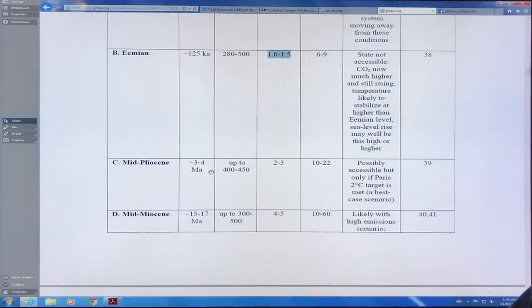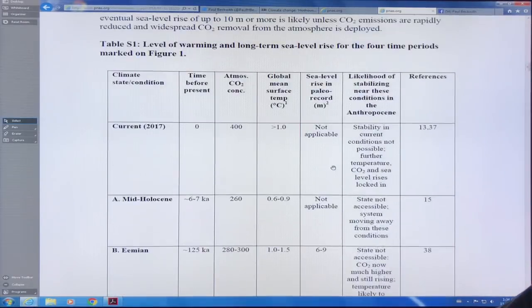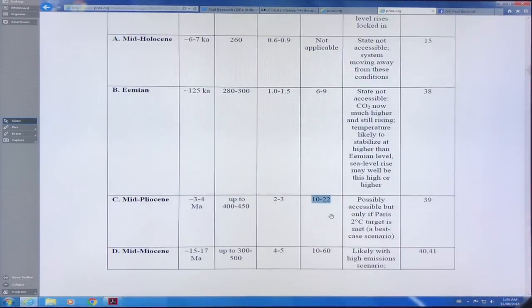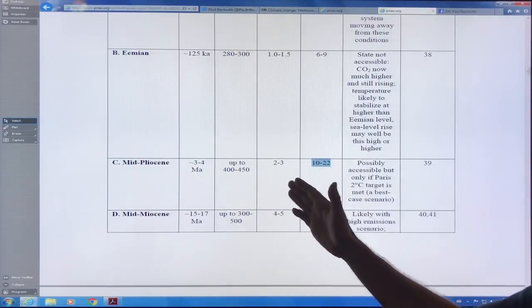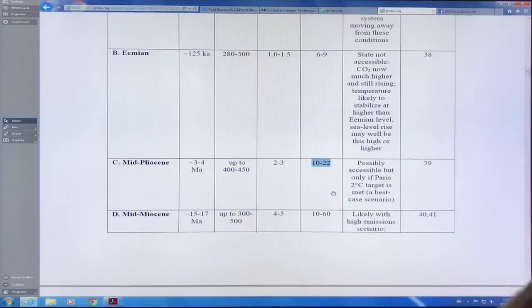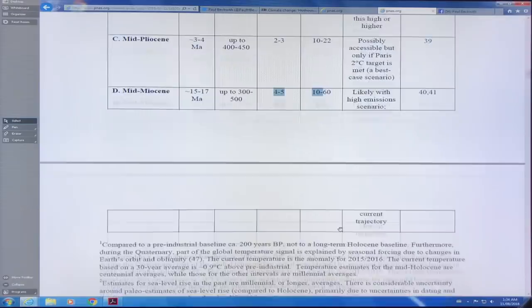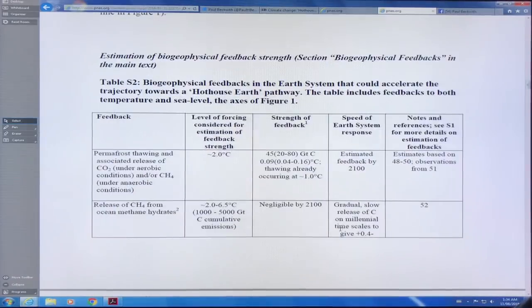In the mid Pliocene, three to four million years ago, we had CO2 levels more comparable to today. We're touching the bottom range here at 400 ppm. Temperatures were two to three degrees warmer and sea level rise 10 to 22 meters higher. And this was a stabilized state. It took time for the temperature to rise up and for the sea levels to rise up in that state. Now we go back even further. We were four to five degrees warmer, 10 to 60 meters of sea level rise.